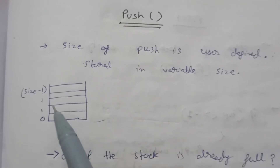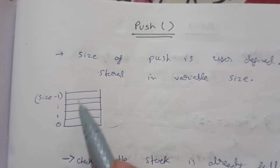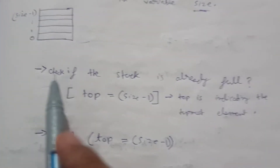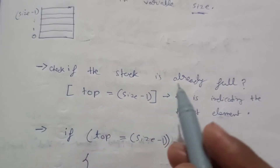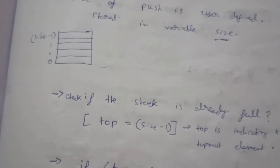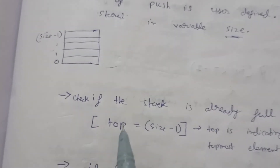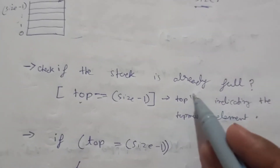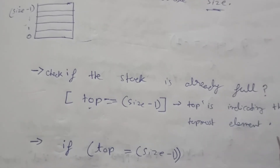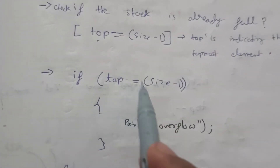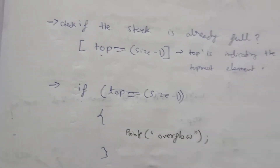For the push operation, the size is user-defined. The stack is implemented using an array, so the indexes will be 0, 1, up to size minus 1. First we need to check the overflow condition. The top value indicates the topmost element of the stack. If top equals size minus 1, that means the stack is full — this is the overflow condition. If top equals size minus 1, we print that it is overflow.